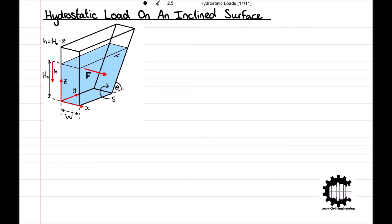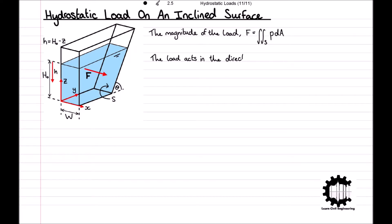As we've seen in previous videos, the magnitude of the load f is given by f equals the surface integral of p with respect to a. Additionally, the load acts in the direction negative n, where n is the unit outward normal vector to the inclined surface.